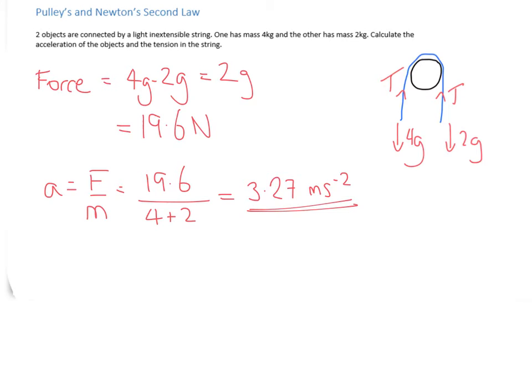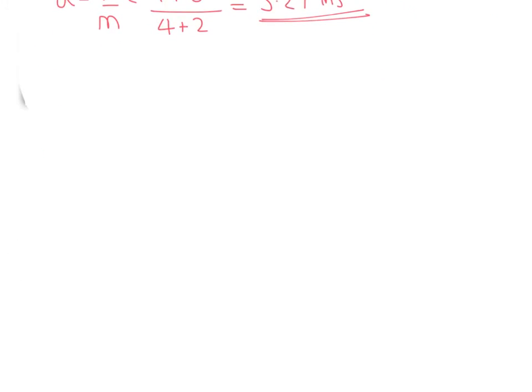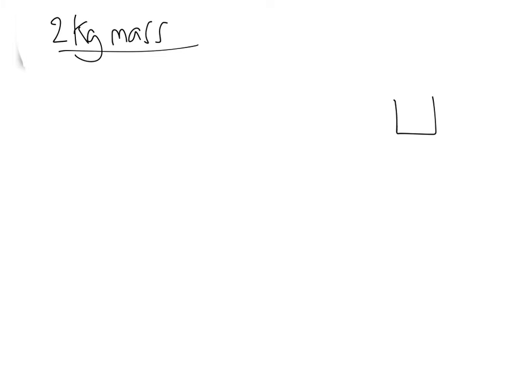So we've done the first part, we've calculated the acceleration. Now what we want to know is what the magnitude of T is. What we're going to do is draw another diagram. I'm just going to consider the 2kg mass. We're going to draw what's called a free body diagram of that. We've got the 2kg mass, 2g acting that way, and the tension acting on it that way.